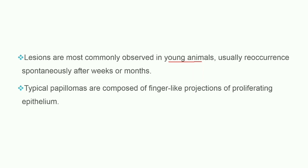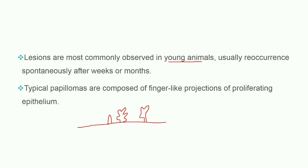Typical papillomas are composed of finger-like projections of proliferating epithelium. The papilloma virus produces these finger-like projections on the skin epithelium lining, sometimes with dividing or branching projections.